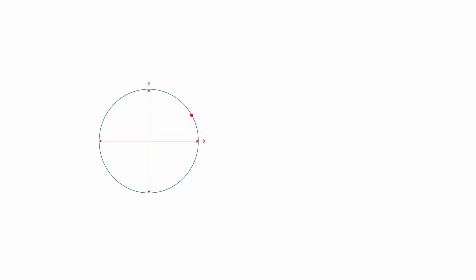Think of a circle, and imagine a dot moving around the circumference of the circle. As the dot revolves, it's actually oscillating left and right in the x-direction, while at the same time moving up and down in the y-direction. Trigonometry allows us to analyse the motion of this dot. In fact, trigonometry was originally developed over 2,000 years ago to explain the motion of stars and planets, albeit with the Earth at the centre of the Universe.